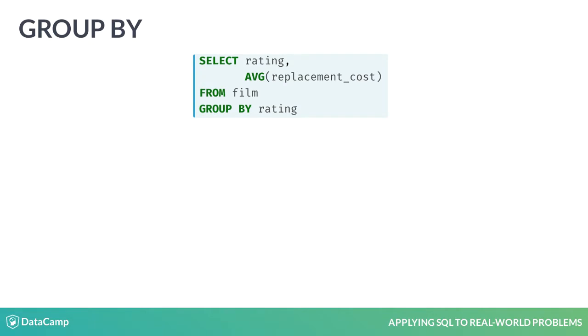Let's unpack how to use and understand aggregate functions by reviewing the following query. This query uses the aggregate function AVG to generate the average replacement cost for each film rating.